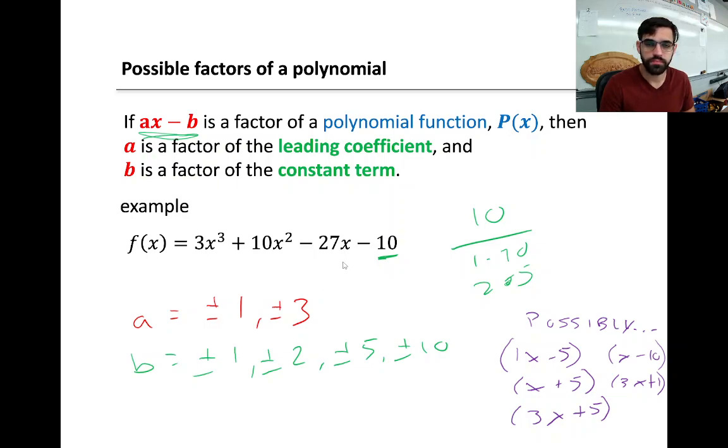And then, the constant term is negative 10. So 10 could be 1 times 10, or 2 times 5. The only possible b values for any factor of this function are positive or negative 1, positive or negative 2, positive or negative 5, or positive or negative 10.